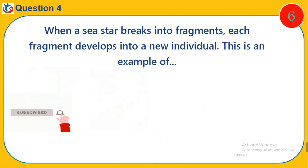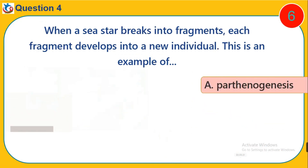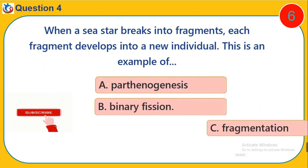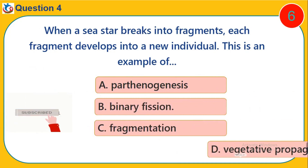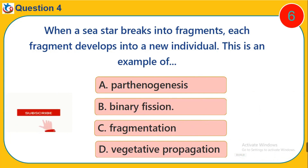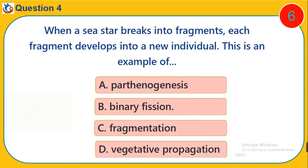Question 4. When a starfish breaks into fragments, each fragment develops into a new individual. This is an example of: A. Parthenogenesis. B. Binary Fission. C. Fragmentation. D. Vegetative propagation.